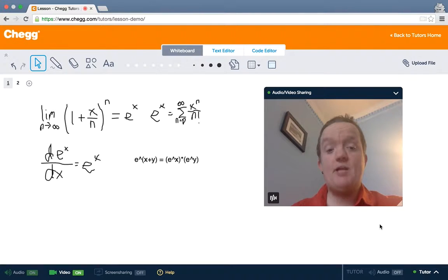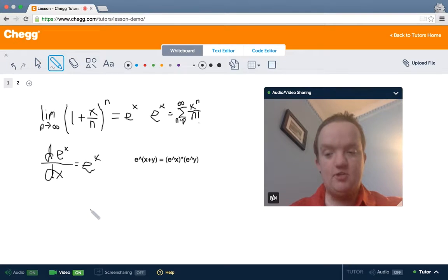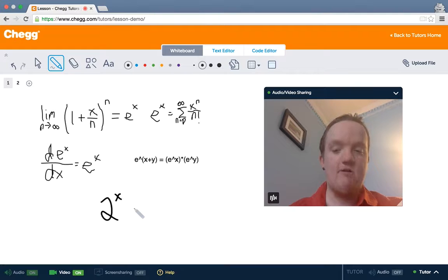Note that exponential functions can have any base. The function e to the x is a very special version, but a function like 2 to the x is also an exponential function. It grows exponentially, where the exponent is a variable rather than, say, x squared, where the exponent is a constant and the variable is the base.